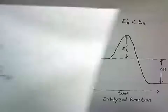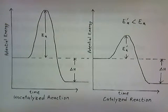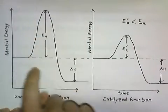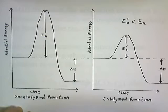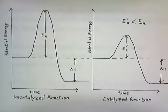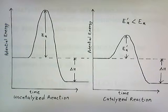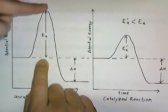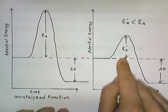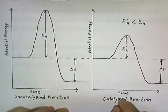Catalysts speed the rate of reaction by lowering activation energy. Here we have a potential energy diagram showing a reaction without a catalyst and with a catalyst. Both graphs show the same chemical reaction — the only difference is that with a catalyst, it takes less energy to initiate the reaction. The activation energy of the catalyzed reaction is less than that of the uncatalyzed reaction. A catalyst somehow lowers and shrinks the activation energy, so you only need that much energy to get the reaction started if you add a catalyst.